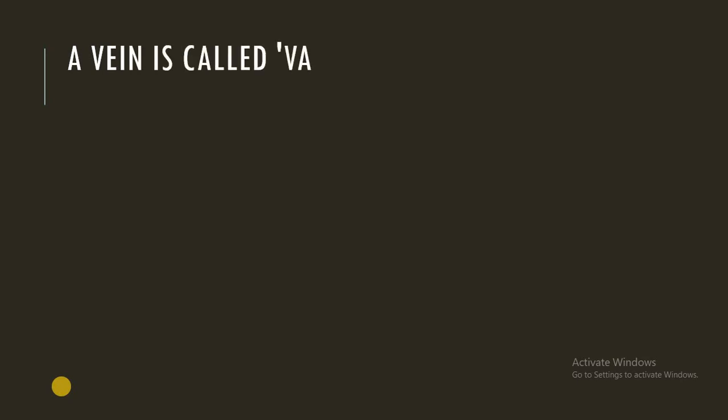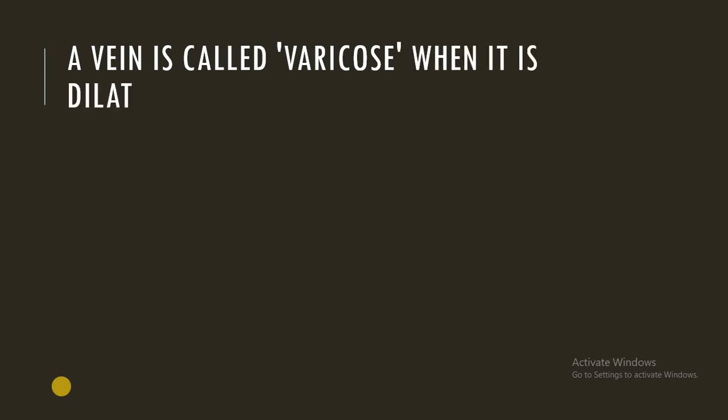Before we start the clinical examination, we must know what a varicose vein is. A vein is called a varicose vein when it is dilated and tortuous. There are various places in the body where veins show a tendency towards varicosity — for example, veins of the lower limb, spermatic veins, esophageal veins, and hemorrhoidal veins.